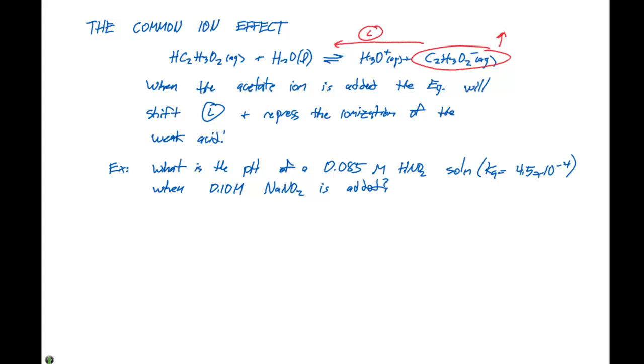If we look at this, we can think about the effect of adding NaNO2 to an aqueous solution. It's a salt, so it will dissolve into Na+ plus NO2-. We have a 0.10 molar solution, so we get 0.10 molar Na+ and 0.10 molar NO2-.